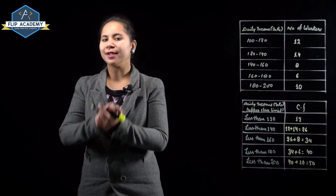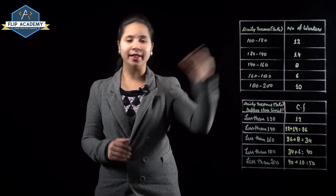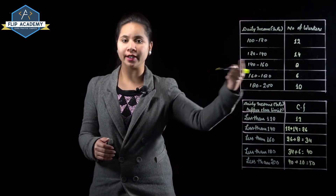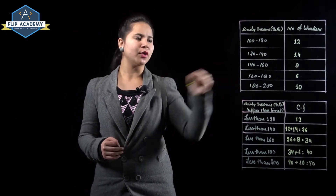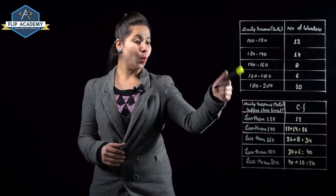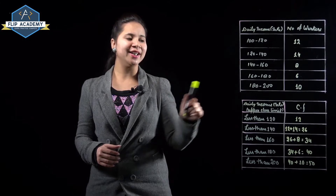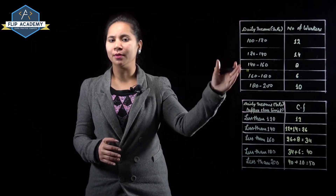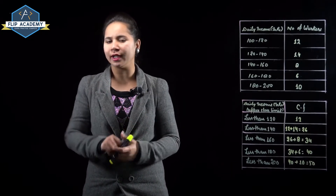50 workers ki daily income provide ki gayi. On the basis of the table: 100–120 has 12 workers, 120–140 has 14, 140–160 has 8, 160–180 has 6, and 180–200 has 10 workers. We need to convert the given frequency table to a less than type cumulative frequency table and draw the ogive.